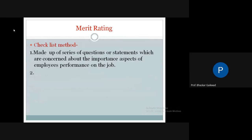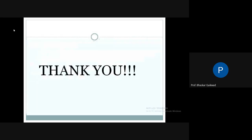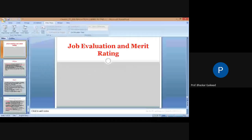Checklist method: made up of a series of questions and statements concerning important aspects of the employee's performance. Certain points are put on paper and the worker is asked to tick them — this is the checklist method. Today we have completed the job evaluation and merit rating part. In the next lecture, we will see the differences between job evaluation and merit rating. Thank you.